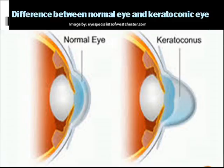The cornea is the front part of the eye that works as a transparent window. It is normally clear, transparent, and round-shaped. When light enters through a healthy cornea, it gets refracted properly. But when someone suffers from keratoconus, the cornea becomes thin and bulges out into a conical shape.